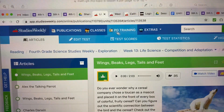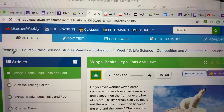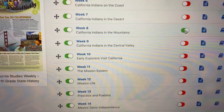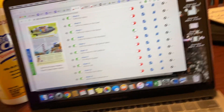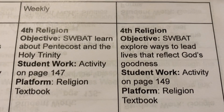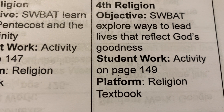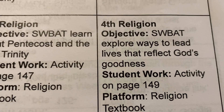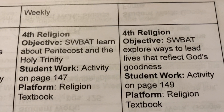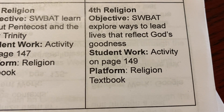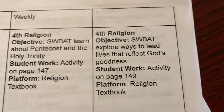That is it for your science. You have your social studies test as well — it is week eight, California Indians in the Mountain, and that one is activated already so you can go ahead and take it now. That is it for your social studies. For religion, we are on Friday. It is the activity on page 149. Your objective is: students will be able to explore ways to lead lives that reflect God's goodness. A very good, very interesting chapter. Please be sure that you are taking your time to read this — don't just do your activity right away. Actually take the time to read the whole passage before you finish the activity. You have plenty of time to read the passage.